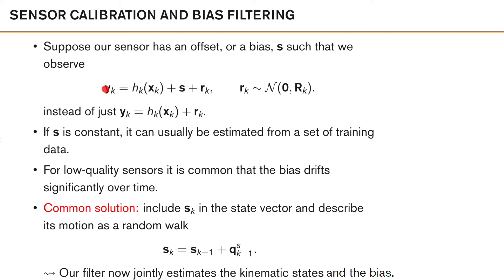If the offset s is constant over time, we can often calibrate our sensor once using a set of calibration data or training data. For instance, in many cases, it's possible to collect calibration data in a test scenario where xk is known, and then we can use that data to estimate s.